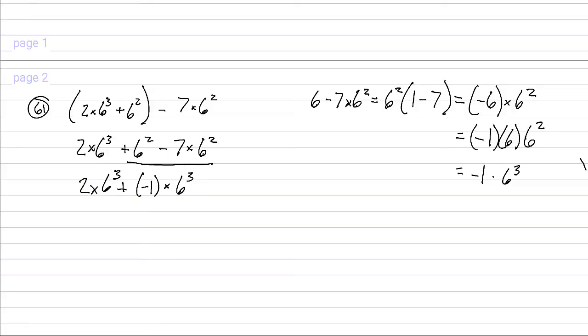And we can factor the 6 cubed out there, so we've got 6 cubed times 2 plus negative 1. We know that's equal to 6 cubed times 2 minus 1, or just 6 cubed.